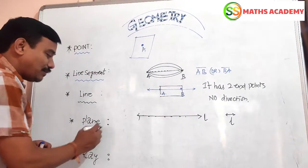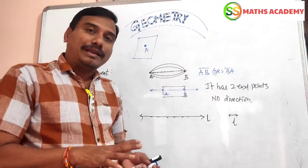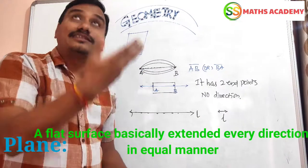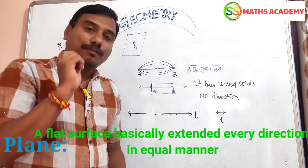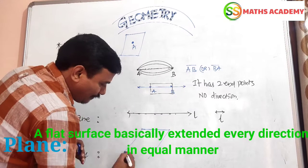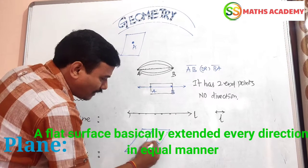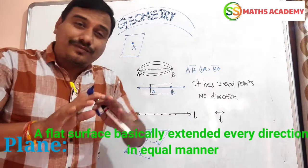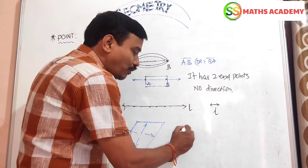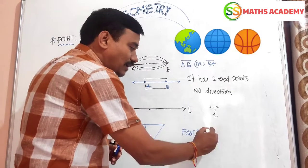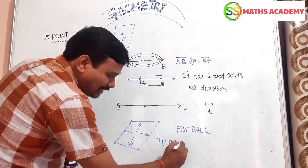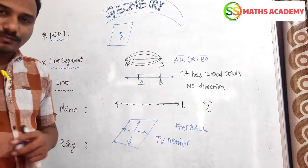Now we are going to discuss what is a plane. A plane is a flat surface. A flat surface extends in all directions in an equal manner. Then it is called a plane. Examples of a plane include a football field, the sky, a building floor, and a TV monitor.